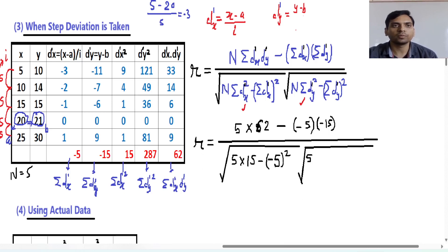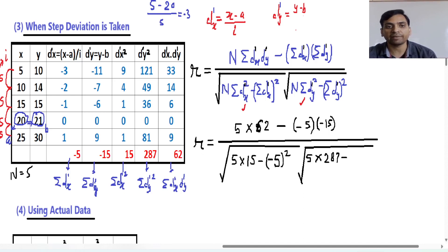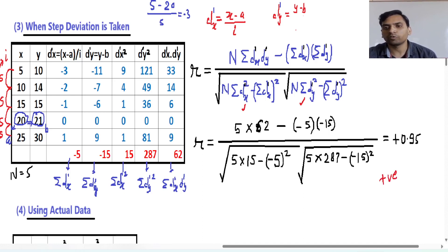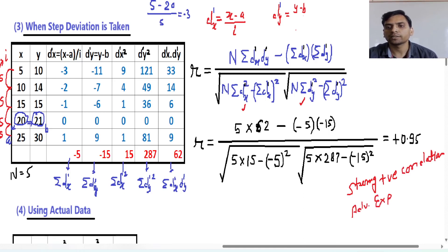In the second under root, you put summation dy-dash squared, which equals 287, minus the whole square of summation dy-dash, which is the square of minus 15. On solving, you will get the result as positive 0.95. Since this is positive, there is positive correlation, and as this quantity is near about 1, we can say there is a strong correlation between the two variables: advertisement expenditure and sales.